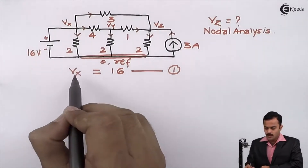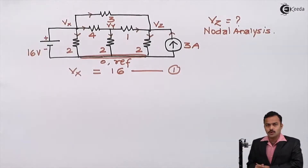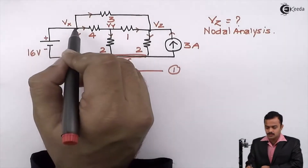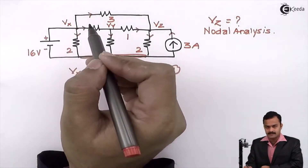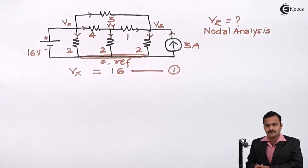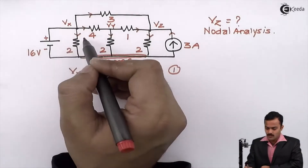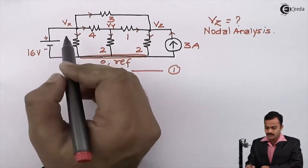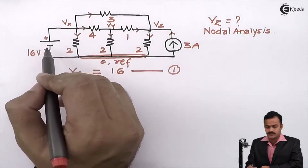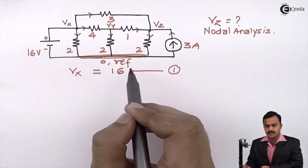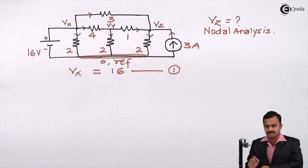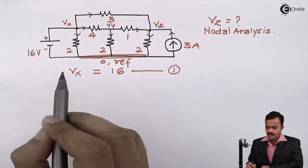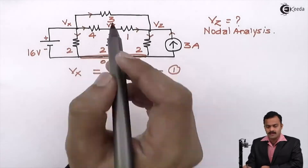Once you have written this as equation 1, there is no need to apply KCL to node X. So our work has been reduced because there were 4 branches connected at that node due to the voltage source. Work has become very simple. Now let's go to node Y.